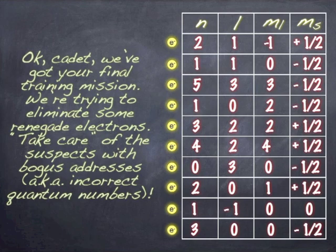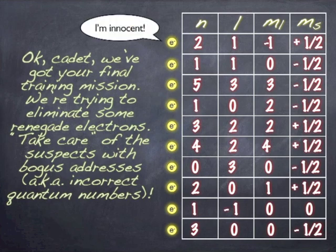Alright, welcome back. So what do you think of the first one? Legit or not legit? It is a legitimate address, right? N can certainly be 2. If N is 2, L can be 1. M sub L can be anything from L to negative L, so negative 1 is okay. 0 and 1 would have also been okay. And spin up is certainly fine.